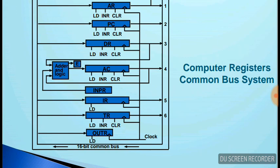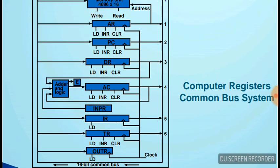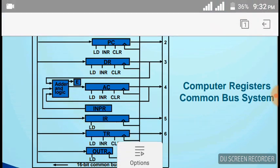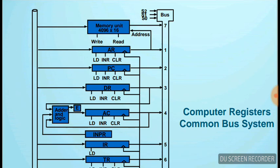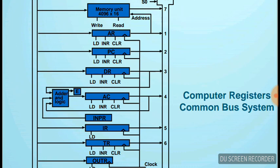OUTR is connected with every register — TR, IR, AC, DR, PC, AR — but OUTR is not directly connected with the memory unit. Therefore, it is connected through AR to the memory unit, which helps eliminate the need for a separate address bus. The accumulator (AC) is known as the processing register; it processes all commands and operations given by the user.